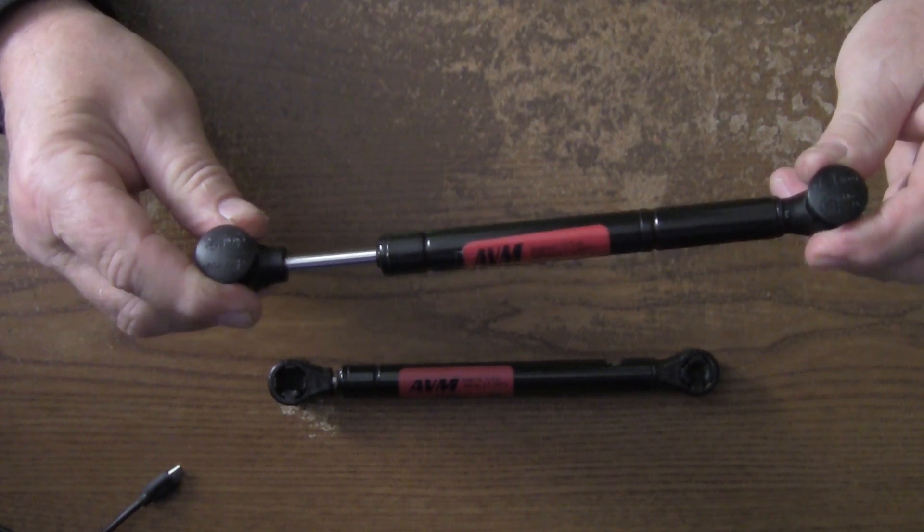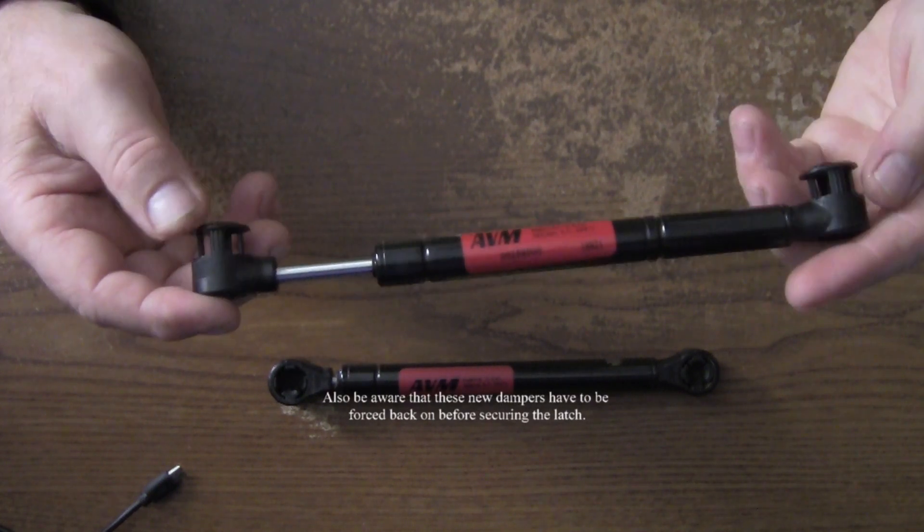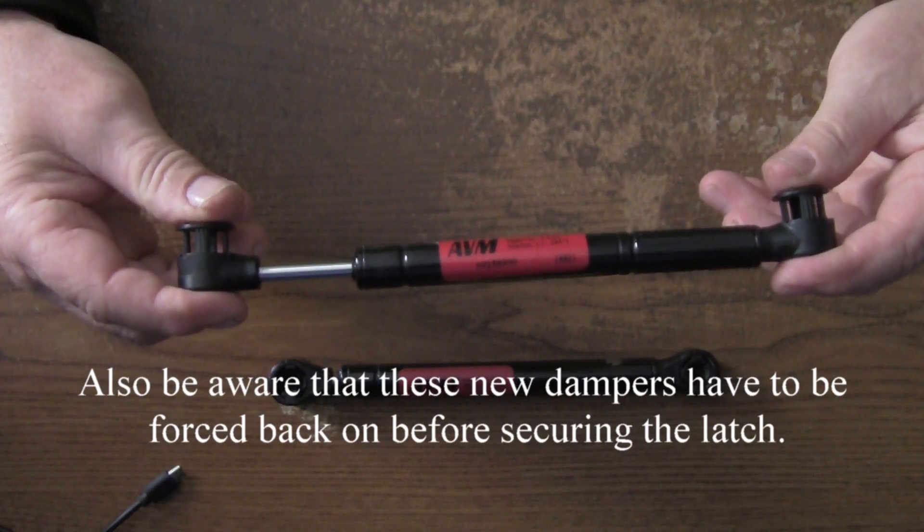Here we got the new control damper for the Gravely. And as you can see, these things here are already popped up when you get them. That way you just put them on the tractor and push these in and it locks it down.